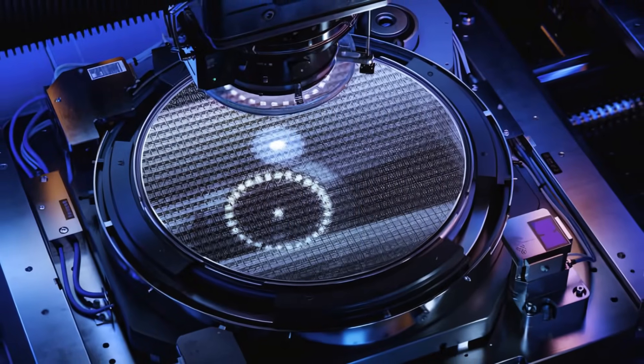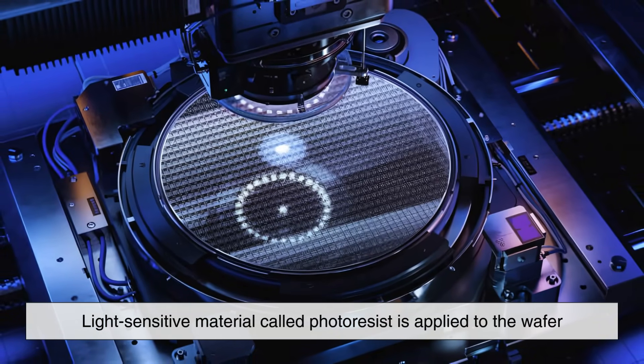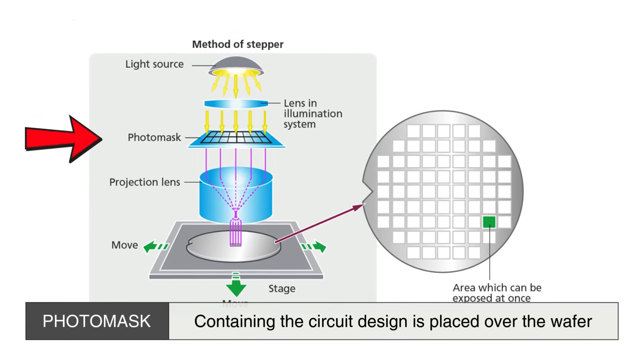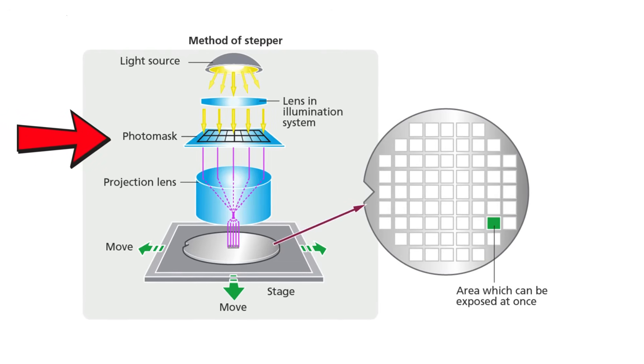Photolithography is similar to photography, where a light-sensitive material called photoresist is applied to the wafer. A photomask containing the circuit design is placed over the wafer, and ultraviolet light is shined through it.